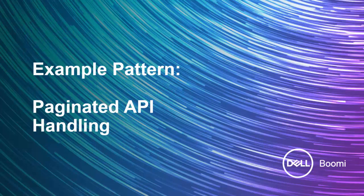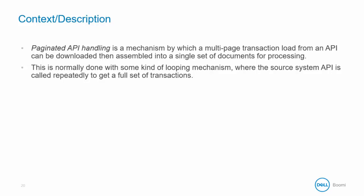Our next pattern is paginated API handling. This is a mechanism where multi-page transaction loads from an API can be downloaded and then assembled into a single set of documents for processing. APIs, instead of sending a single large set of data, can send batches.